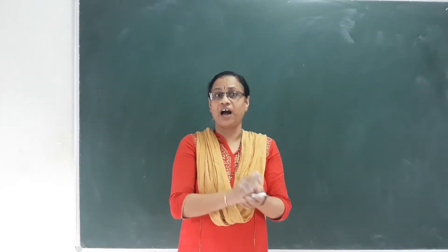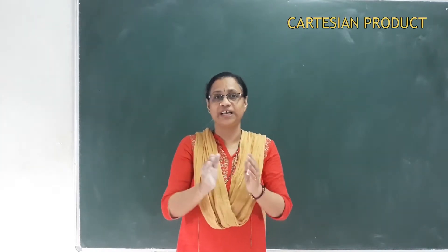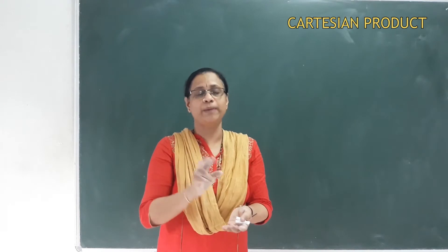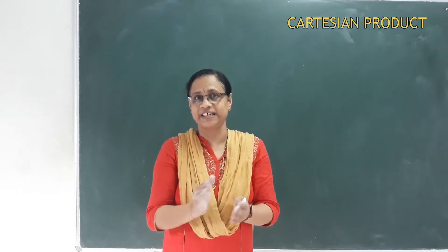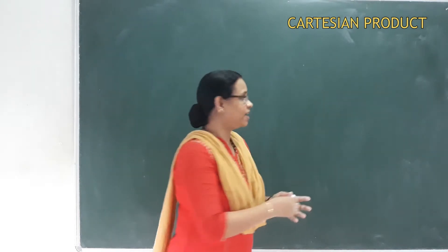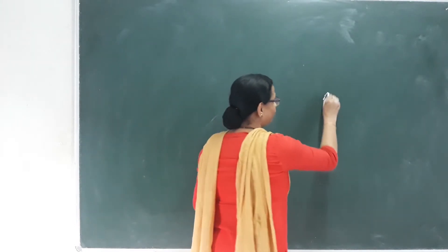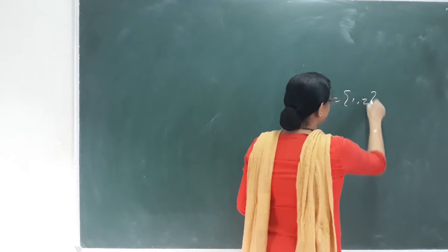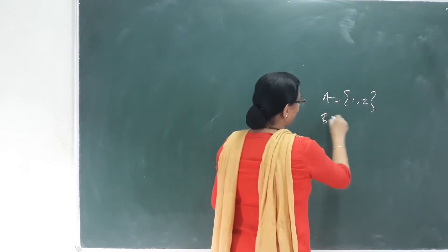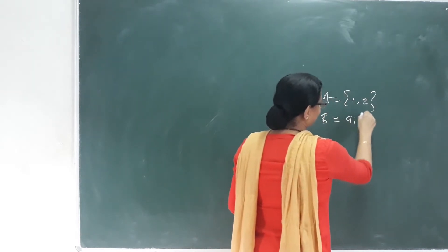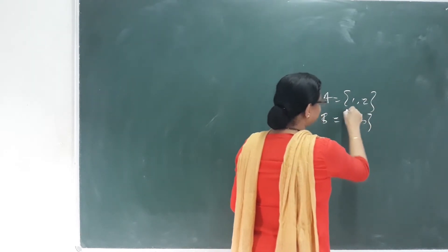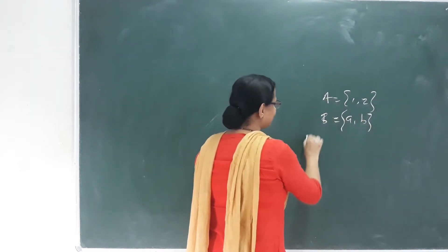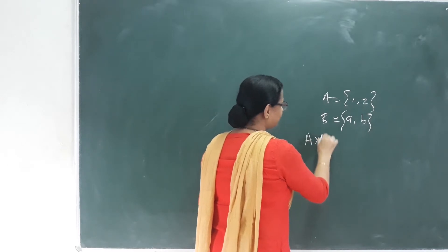What is this? It is called Cartesian product, also called cross product, using non-empty ordered pairs. For example, A is equal to {1, 2} and B is equal to {a, b}. These two sets form A cross B.